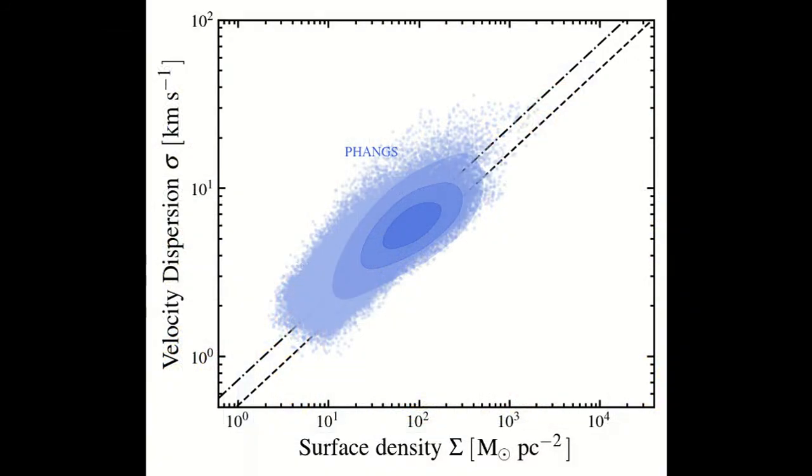We observe strong correlation between molecular gas surface density and velocity dispersion in the star-forming disks. This scaling relation is the counterpart of the so-called Larson's relation, but derived at a fixed spatial scale. For the 11 galaxies in the PHANGS sample, the slope and normalization of this relation suggests that the observed molecular gas is close to energy equipartition, meaning that the kinetic energy nearly balances the gravitational potential energy.